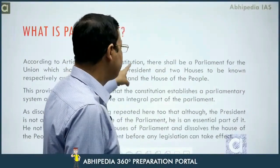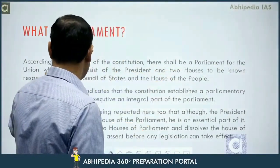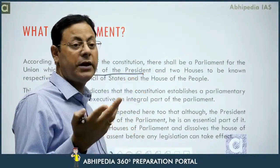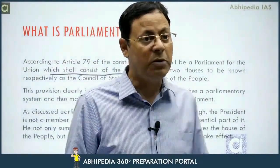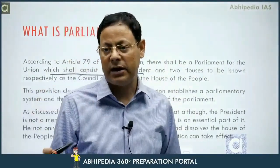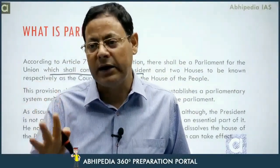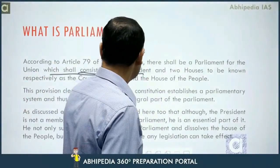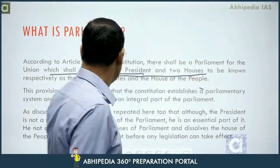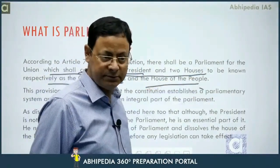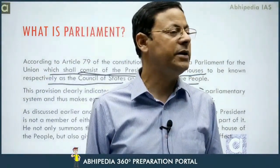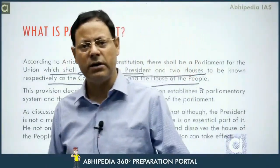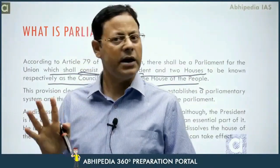According to Article 79 of the Constitution, there shall be a Parliament for the Union. This is evidence of India's parliamentary system. Article 79 clearly states that the Parliament of India is bicameral and shall consist of the President and two houses — the Council of States and the House of the People. Council of States means Rajya Sabha and House of the People means Lok Sabha. These two names are not written in the Constitution.